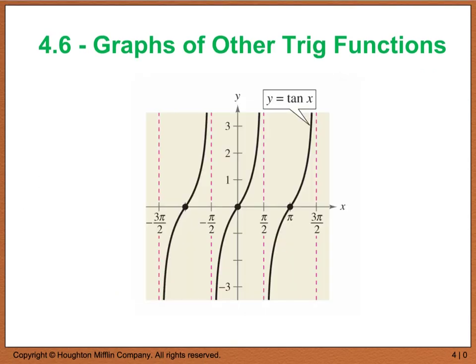If we graph this on our calculator — please make sure you're in radian mode — you're going to see a graph that looks like a slight S-shape. At every increment of pi we have an x-intercept: here's 0, pi, negative pi. On our increments of pi/2 we have red dashed lines which are vertical asymptotes, where the denominator equals 0.